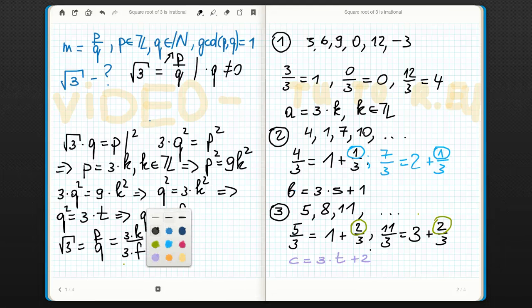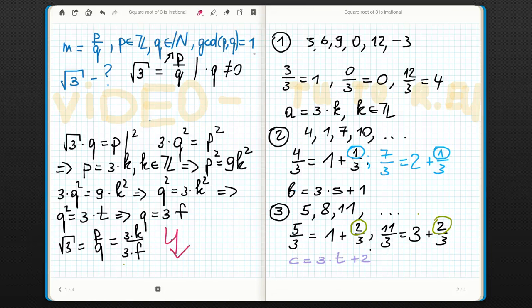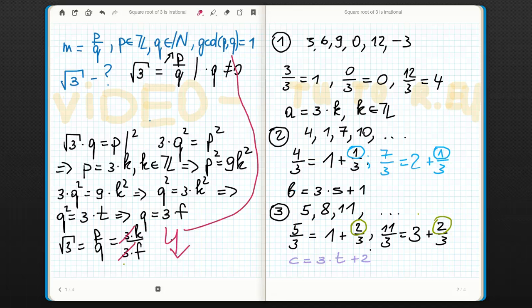Which is a contradiction to our assumption that p and q have gcd equals 1. Yes, because we can divide it by 3 right now, so this is exactly a contradiction to this condition.